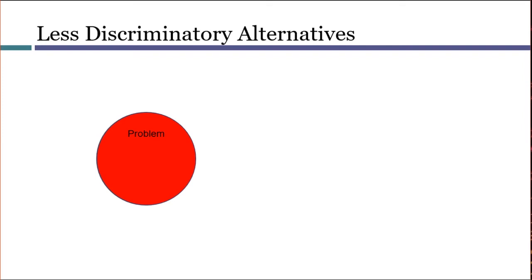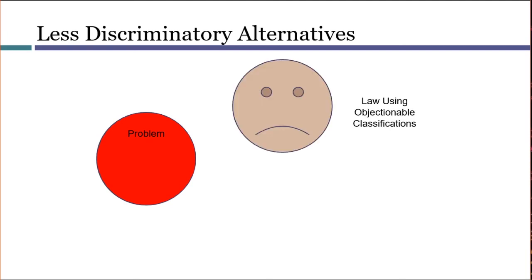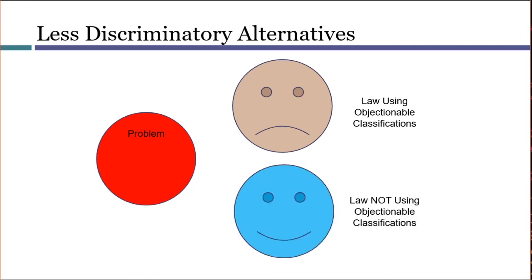Another way to think about tailoring considers alternatives. Imagine that we have a problem with a shortage of gasoline, and one way to deal with this would be to ration gasoline by sex — men can buy gasoline on even-numbered days, and women can buy it on odd-numbered days. Now, this may solve the gas shortage problem, but it's relying on a sex classification, and that's objectionable and should be avoided if it's possible. Is it possible to solve the problem without relying on this particular classification? Yes, it is. The government could institute some kind of lottery system. So we think of that as a less discriminatory alternative.